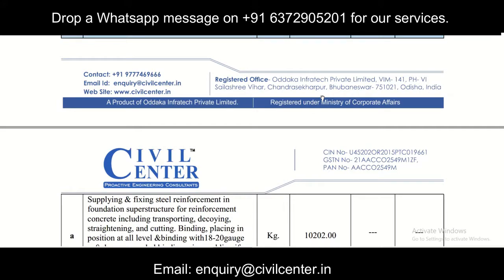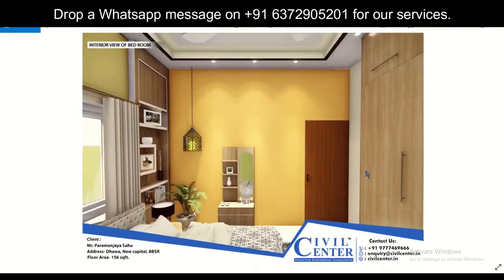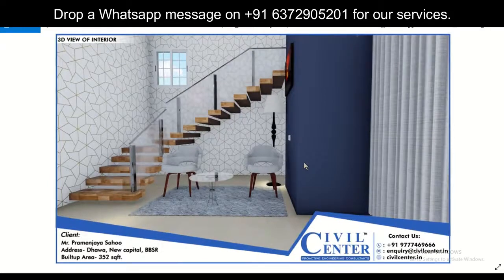Now we move towards our interior works. First we have a look at the interior view of the bedroom on the ground floor. We have given cupboards, false ceiling with LED lights, a fan, AC, a king-size bed, and cupboards. This is another view of the bedroom in which the cupboard is more visible, along with the dressing table and a window behind the bed.